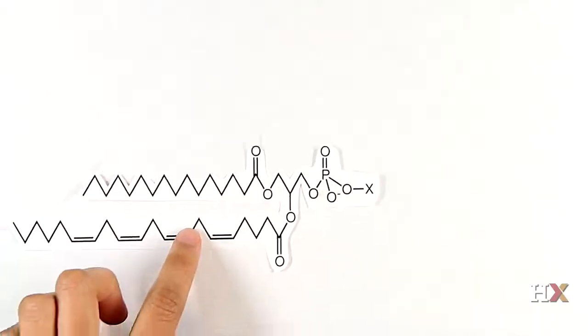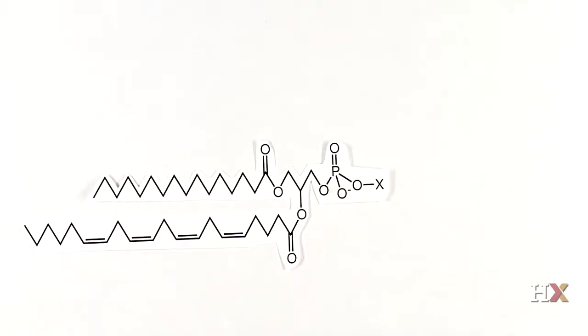Two major types of structural lipids are glycerophospholipids and sphingolipids. Let's see how these structural lipids are assembled.